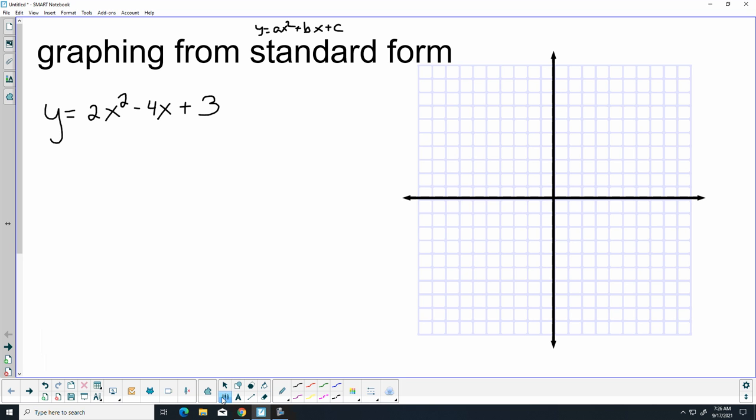All right, let's talk about graphing from standard form. Standard form is y equals ax squared plus bx plus c, where you've got numbers in front of your x squared, your x, and you have a constant at the end.